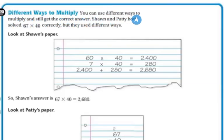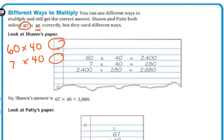So there's different ways to multiply, and you can use different ways to multiply and still get the same correct answer. So Sean and Patty both solved the problem 67 times 40. They did it correctly, but they used different ways. So look at Sean's paper and see how he did it. So he did 60 times 40 and then 7 times 40. So kind of like when we broke our things apart, he took the 67 and he did 60 and 7. And then he did them individually by 40. So then he would get his partial products and add those together, right? So 60 times 40 was 2,400. 7 times 40 was 280. And then he added those two numbers up. 2,400 plus 280. And he got 2,680. So he used partial products by breaking up this number.